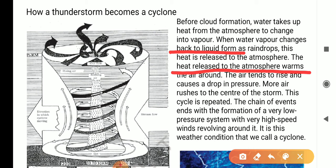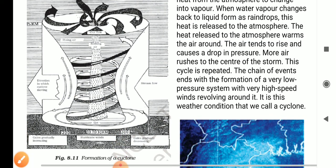The heat released to the atmosphere warms the air around. The air tends to rise and causes a drop in pressure. More air rushes to the center of the storm. This cycle is repeated. The chain of events ends with the formation of a very low pressure system with very high speed winds revolving around it. It is this weather condition that we call a cyclone.